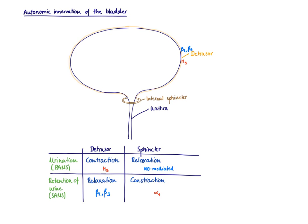M2 is on the heart, M3 everywhere else. M3 mediates smooth muscle contraction. Therefore, the detrusor muscle that contracts is an M3 effect.